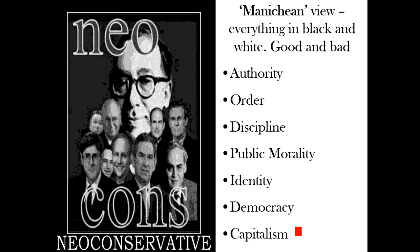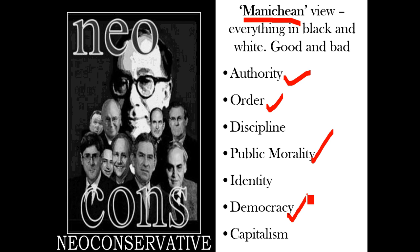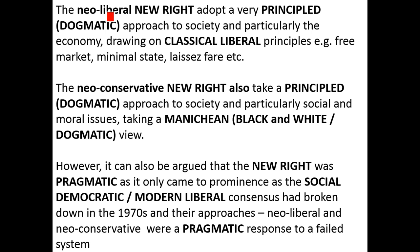Neoconservatives therefore emphasised the restoration of social order and public morality by restoring authority and imposing social discipline, with a particular emphasis on the family and the nuclear family as one of the main authority systems that permissive society and liberal legislation from the 60s and 70s had undermined. Just as neoliberals can be described as very dogmatic or principled in their approach, sticking to classical liberal principles, equally the neoconservatives can be described as dogmatic or principled. They take a Nietzschean view: everything is black or white. Authority is good; lack of authority is bad. Order is good; lack of order is bad. There are good lifestyles and bad lifestyles, good states and bad states.